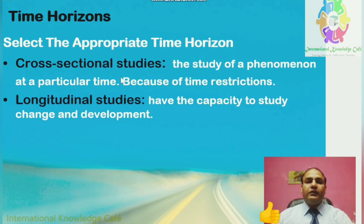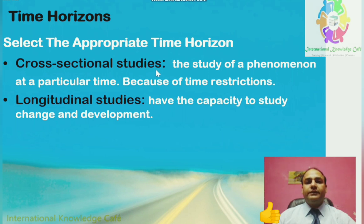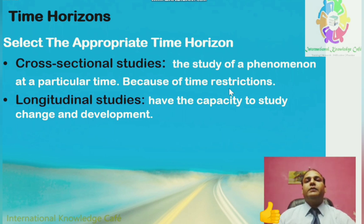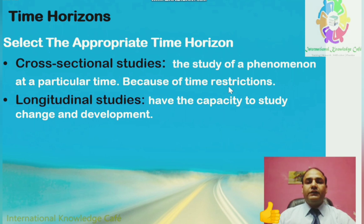The third element of research design is Time Horizons. You need to select the appropriate time horizon. There are two popular time horizons: Number one is Cross-Sectional Studies, and number two is Longitudinal Studies. Cross-sectional studies involve the study of a phenomenon at a particular time because of time restrictions — when you have a limited time frame of two, six, eight, or ten months to complete the study.